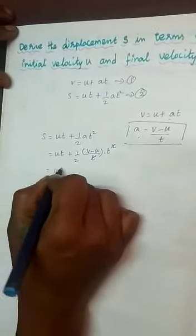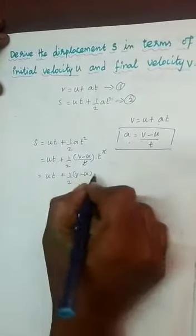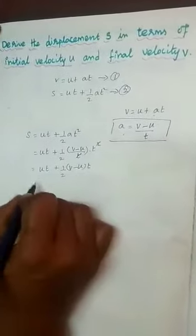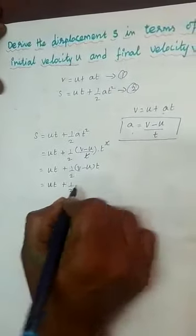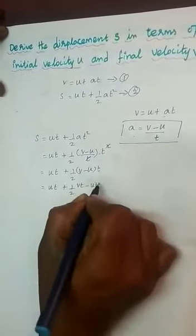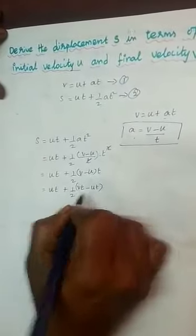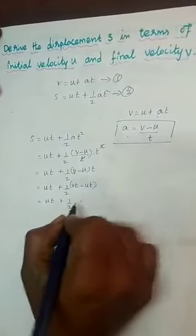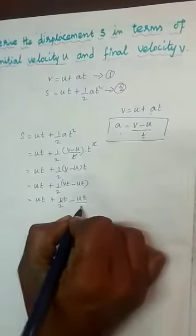Now, we are cancelling T and T squared. So, the equation becomes U T plus 1 by 2 into V minus U into T. Now, we are multiplying inside by T: U T plus 1 by 2 into V T minus U T. So, the 1 by 2 is common for both, giving U T plus V T by 2 minus U T by 2.